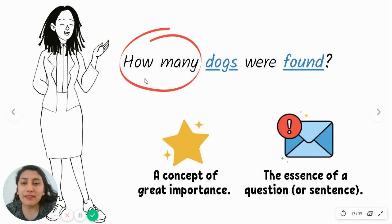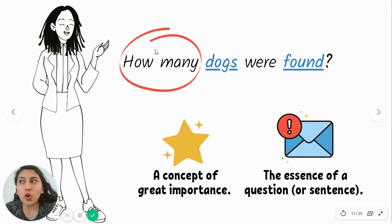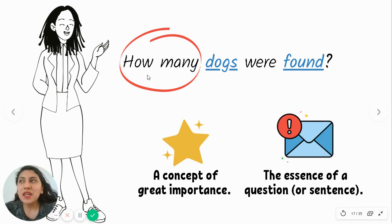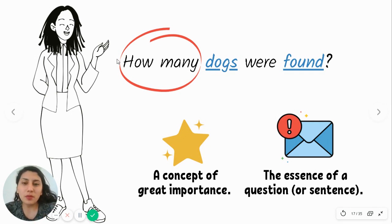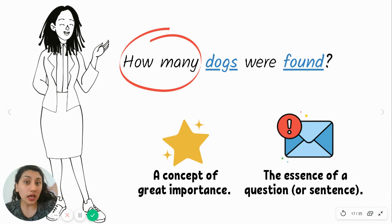Now, 'how many' is not a keyword, but it helps us a lot when answering questions from a text. It's a WH word, or question word, or information word — these tell us what type of information is being asked for and help us anticipate how the information will appear. For example, 'how many' means quantity — maybe I'll find a number, maybe I need to count something.